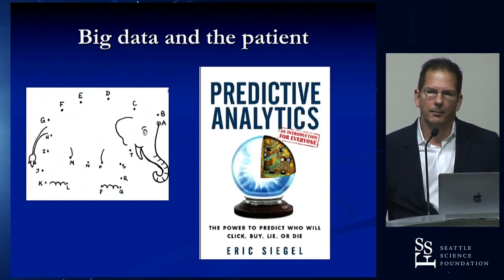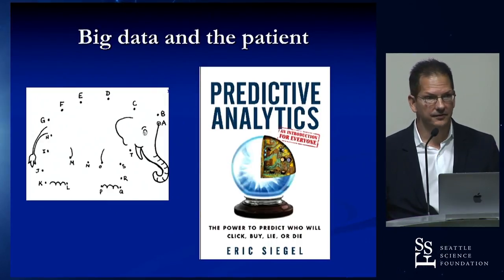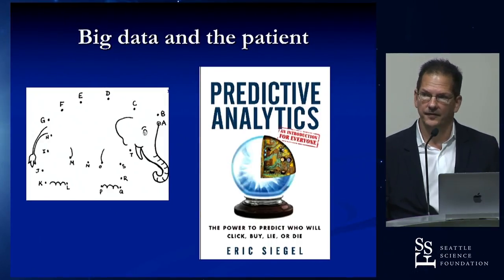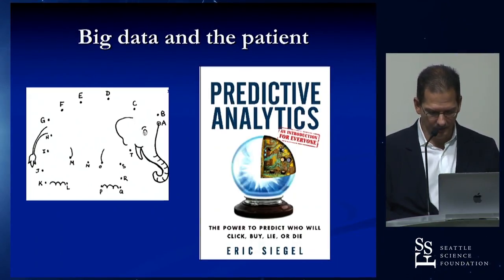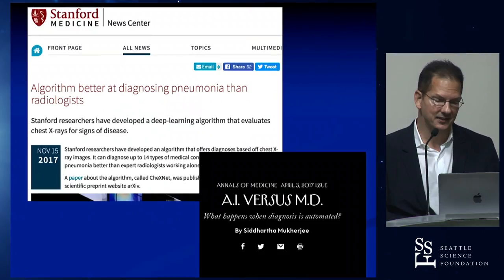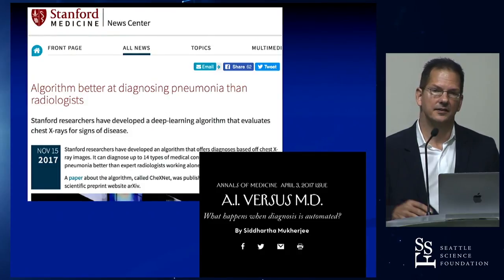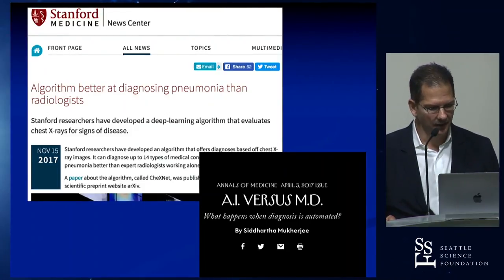But what if we took an even bigger approach? Frailty is only one part. We also have surgical invasiveness, the operation we're going to do, the facility, the surgeon, and maybe other factors the computer can identify that we can't. That's where we turn to big data and predictive modeling.